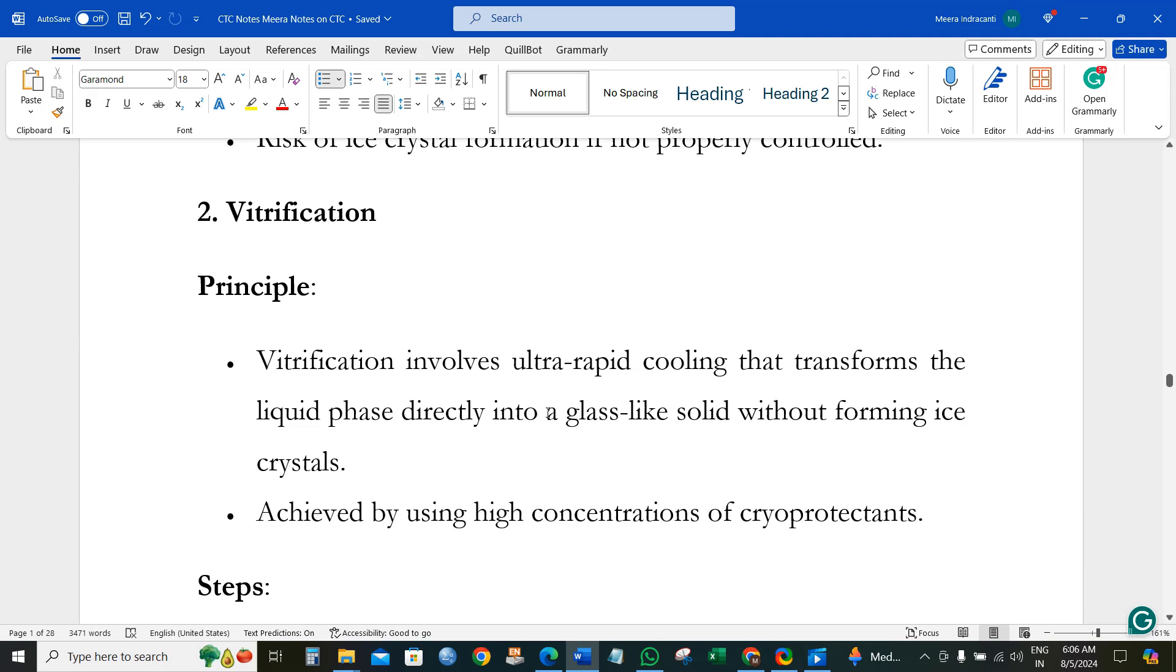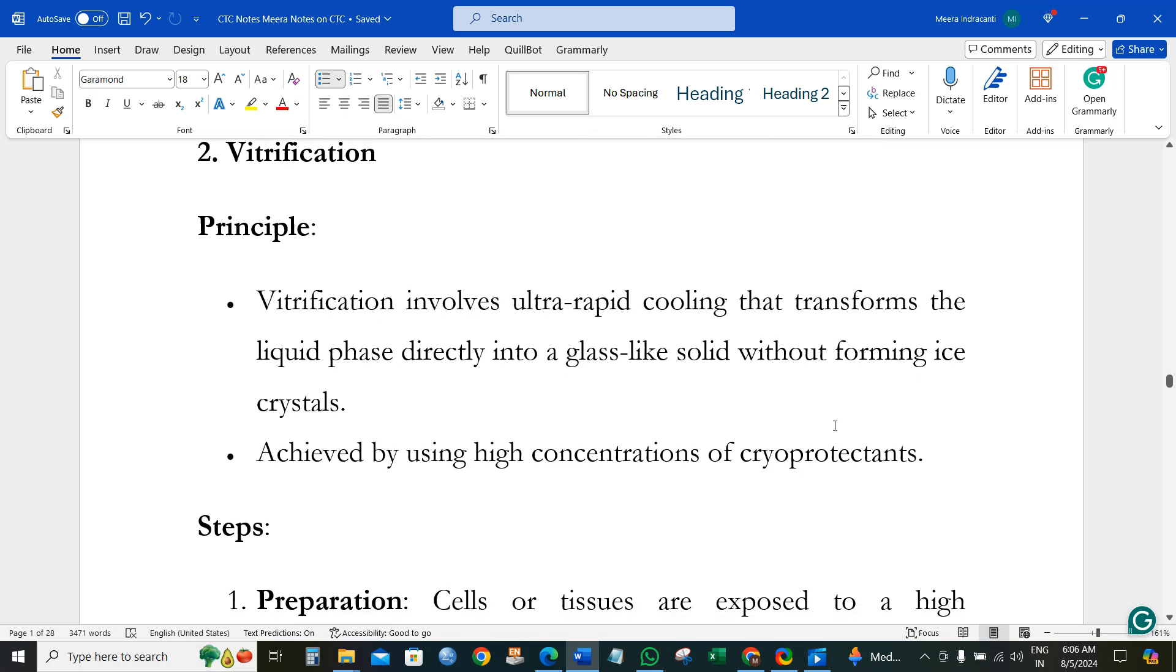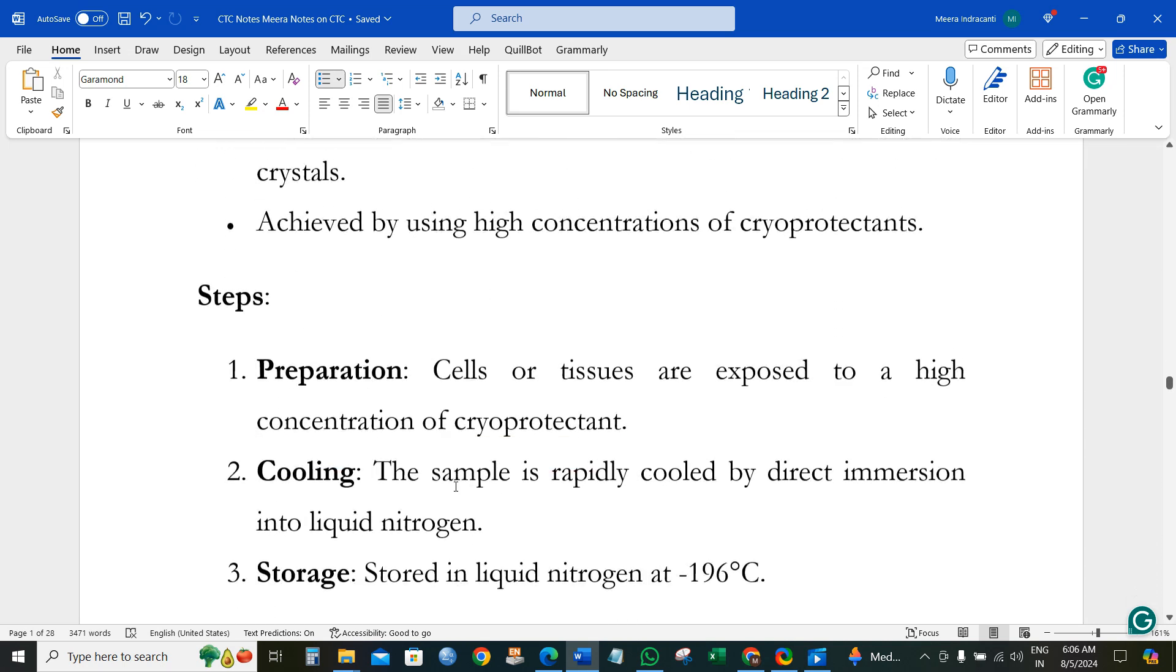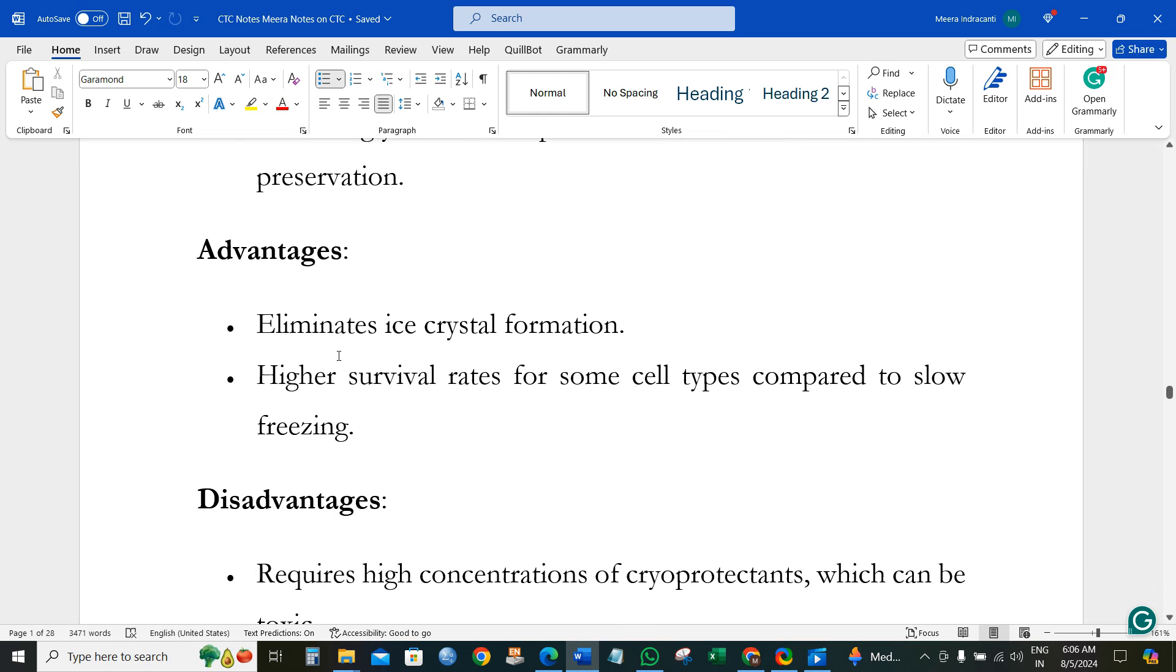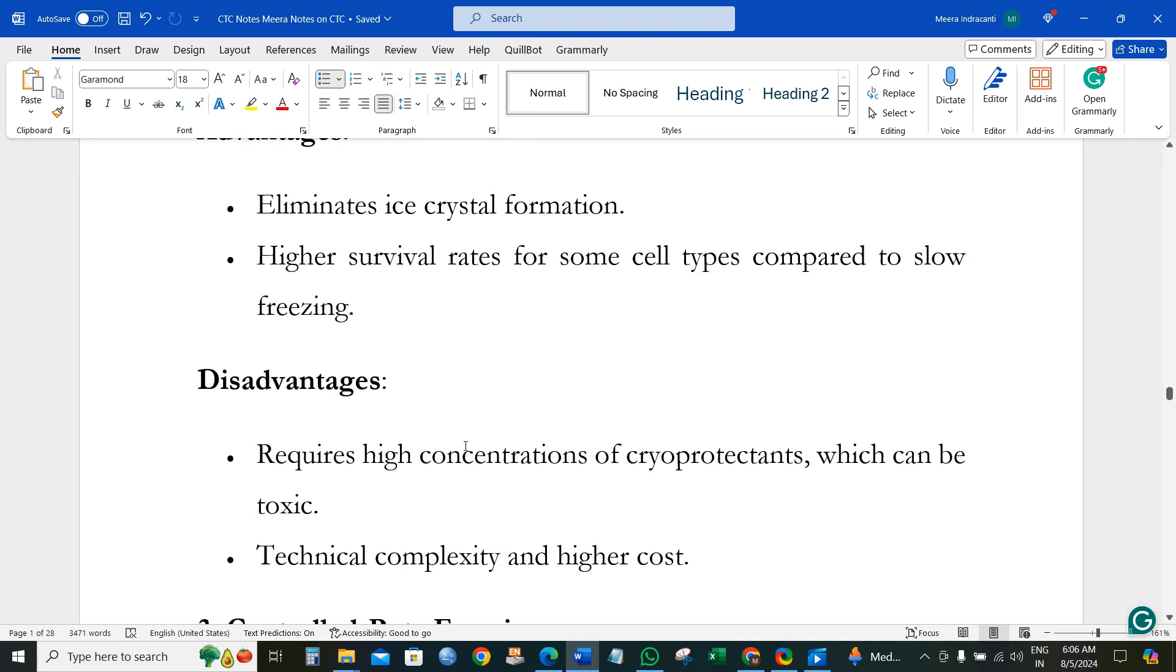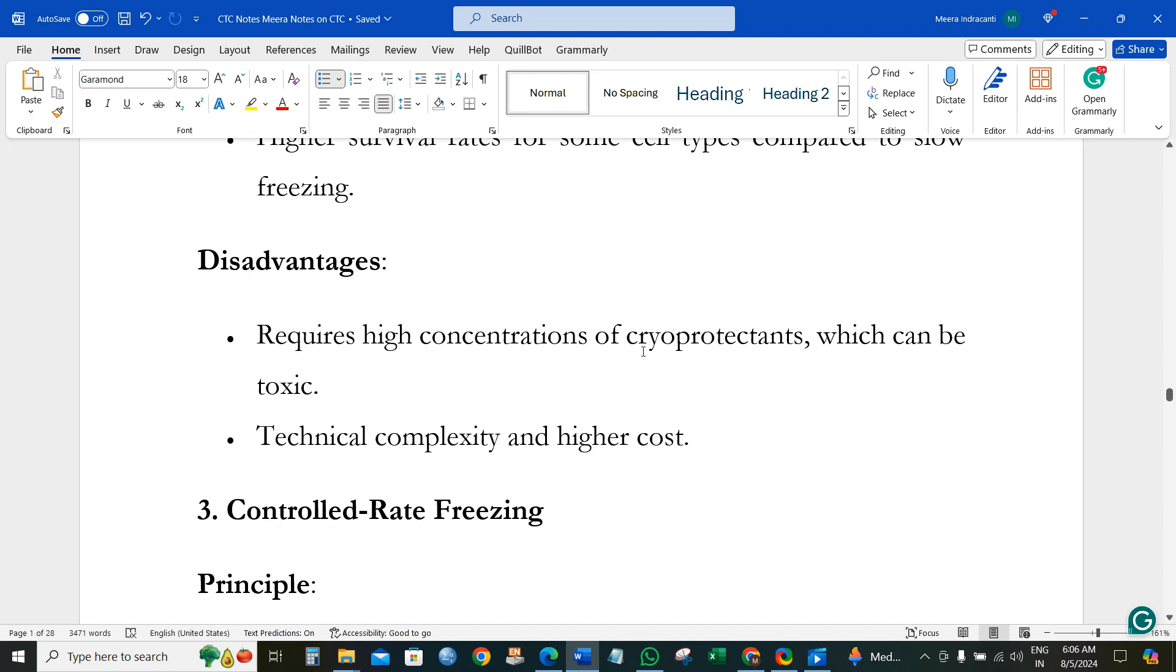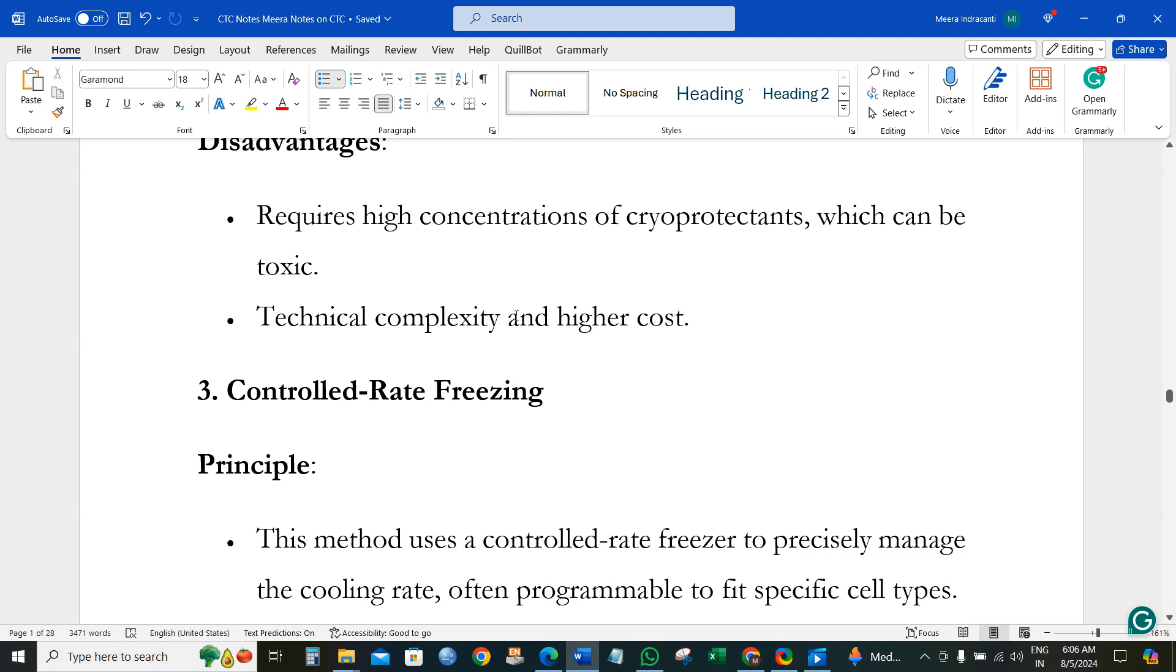Vitrification is rapid transfer from liquid phase directly to glass-like solid without forming ice crystals. It is achieved by high concentration of CPAs. The importance of CPAs is they eliminate ice crystal formation. The limitation is high concentrations required, which can be toxic, and it is technically complex with costs involved.